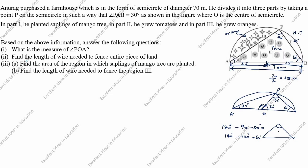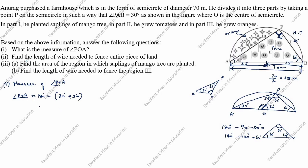Since the equilateral triangle angle is 60 degrees, the remaining angle at the base is 90 minus 60 equals 30 degrees. Now we calculate angle POA. Angle POA equals 180 minus (30 plus 30) degrees, which is 180 minus 60 equals 120 degrees. So angle POA is 120 degrees.